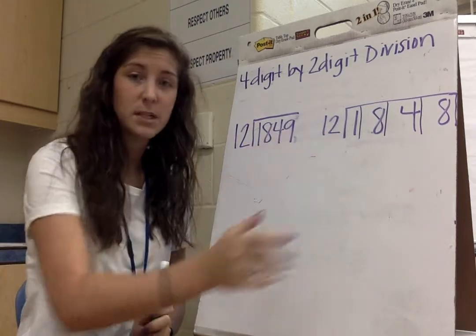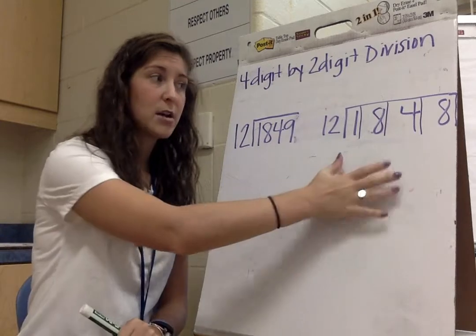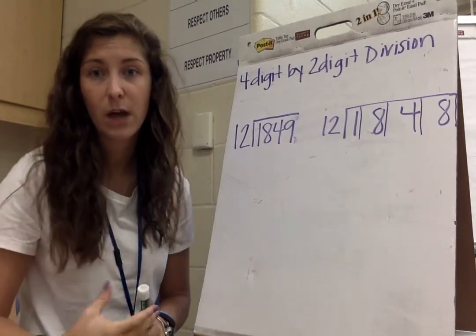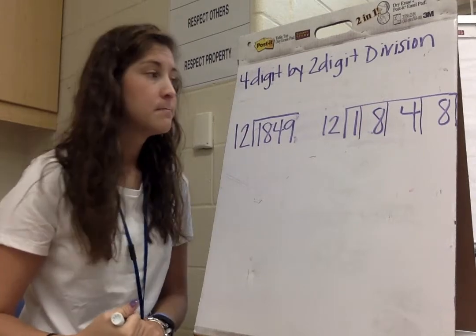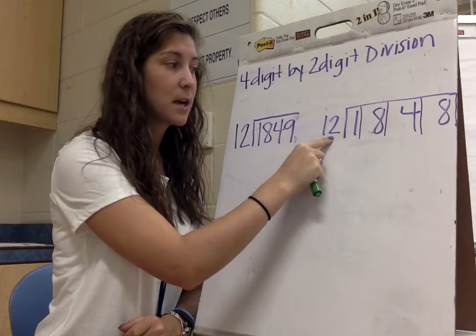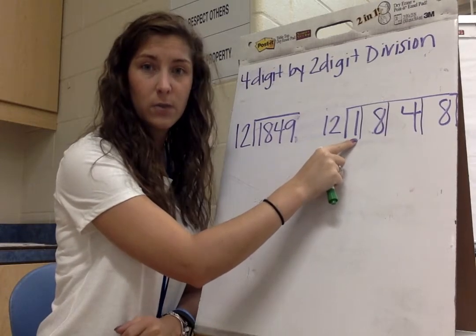I'm going to do both of these problems. I'm going to do the area model first, and then I'm going to switch over and do the standard algorithm so you can see both. So starting with the box method, the first question that I have to ask myself is how many times can 12 go into 1?